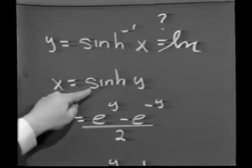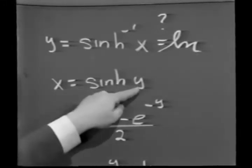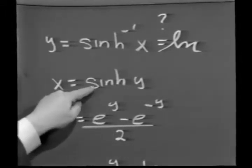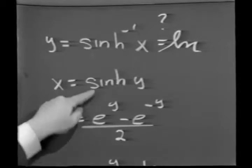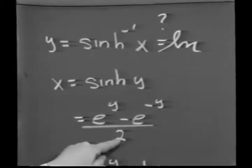Now, for obvious reasons, since I want to get the inverse of exponentials in here, it would seem to me that I should express sinh y in terms of exponentials. And going back to basic definitions, sinh y is e to the y minus e to the minus y over 2.